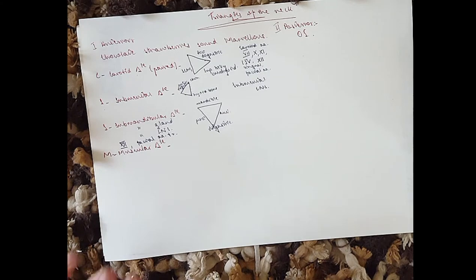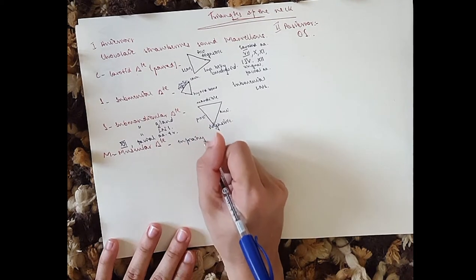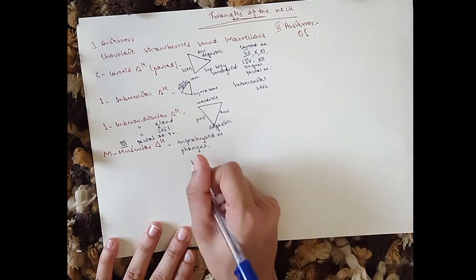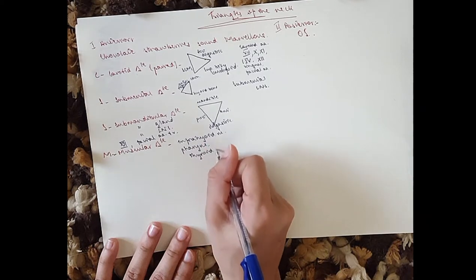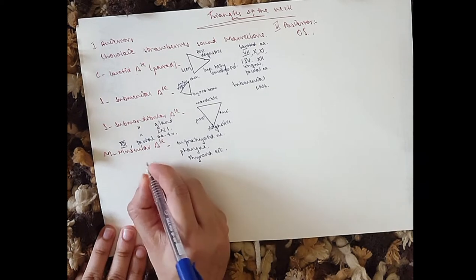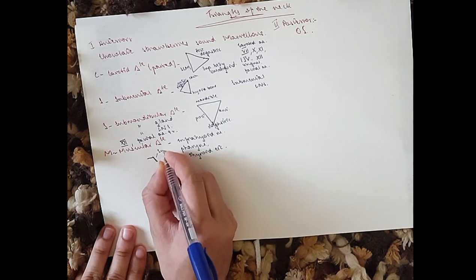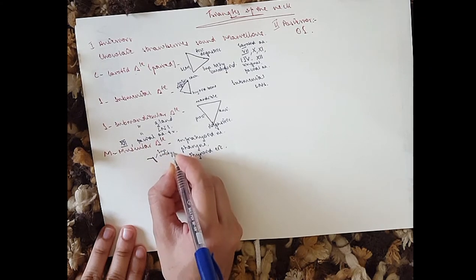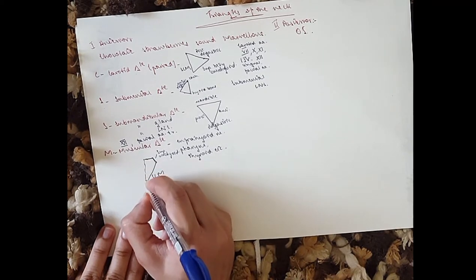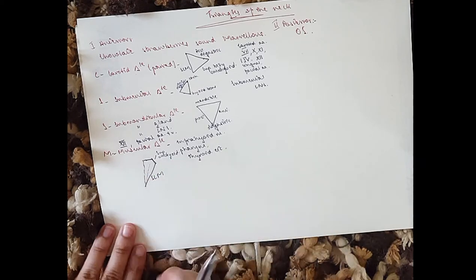Then the last anterior triangle: we've got the muscular triangle, which consists of the infrahyoid muscles — which is why it's called muscular. It also contains several organs like the pharynx, the thyroid, and the parathyroid. The borders here are the hyoid bone, the superior belly of the omohyoid, the sternocleidomastoid, and the midline of the neck. The hyoid bone and the midline of the neck kind of form the triangle — that's the muscular triangle.